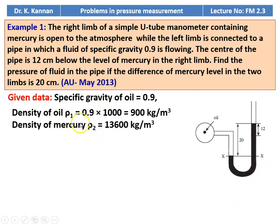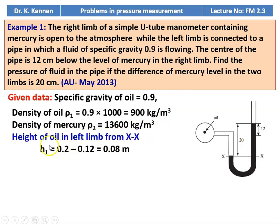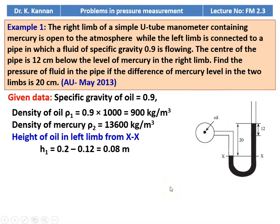We are given the specific gravity of the oil. Density of the oil equals specific gravity into 1000, which equals 900 kilograms per meter cube. Density of mercury is 13,600 kilograms per meter cube. The height of oil in the left limb above XX — XX is the datum level. H1 equals 0.2 minus 0.12, equal to 0.08 meter.